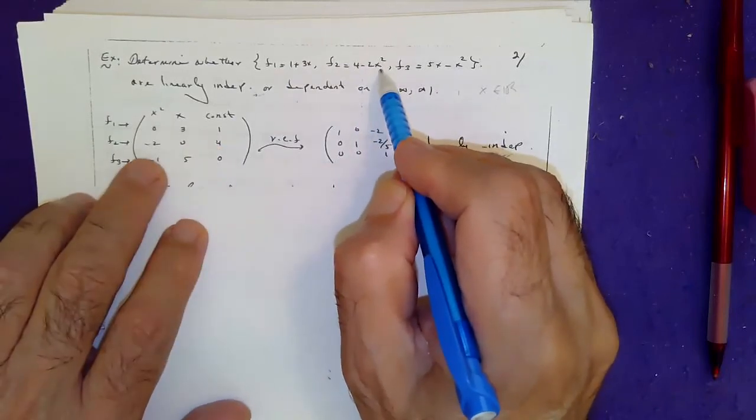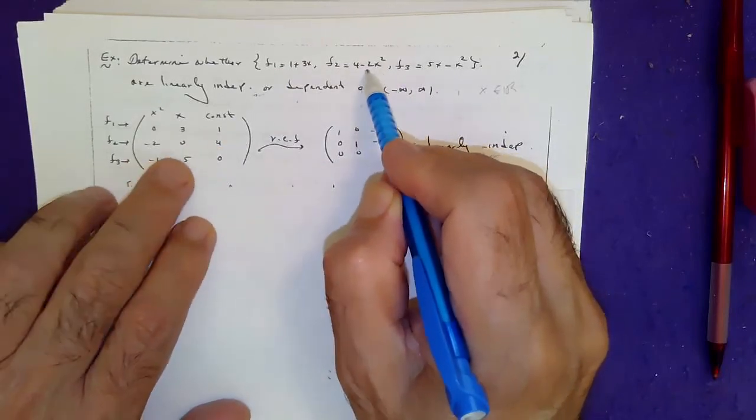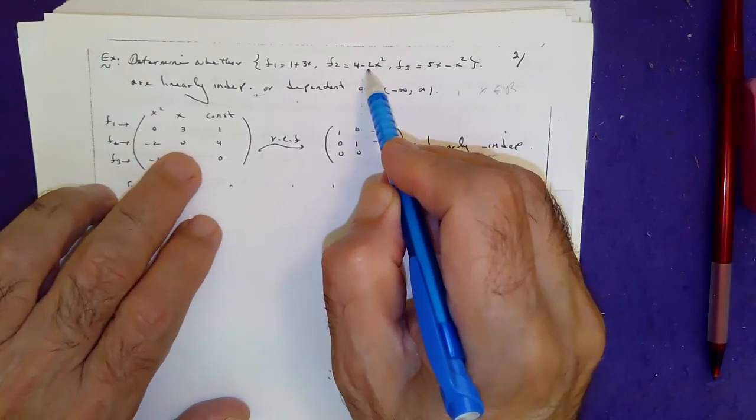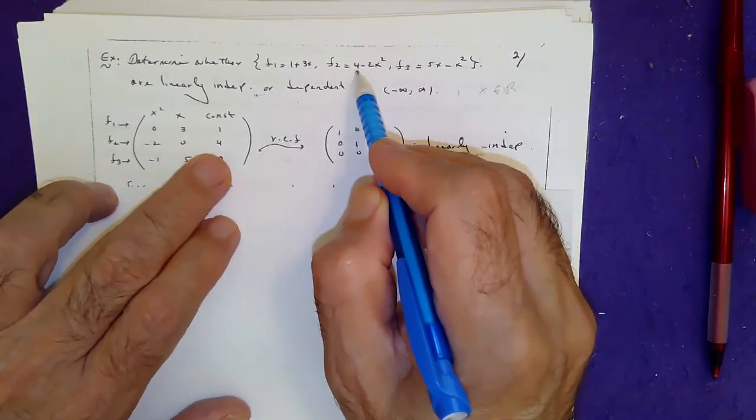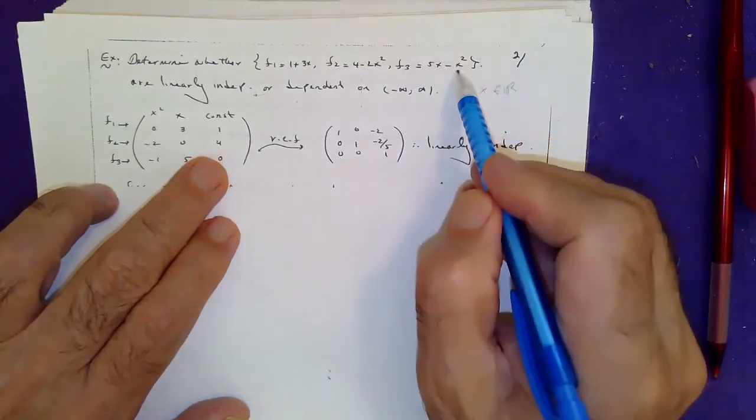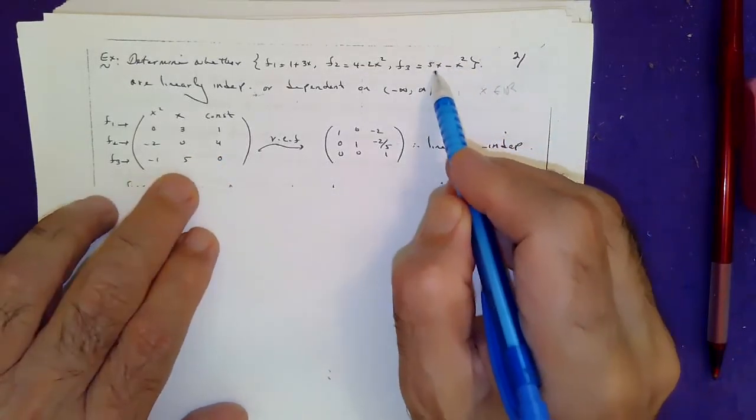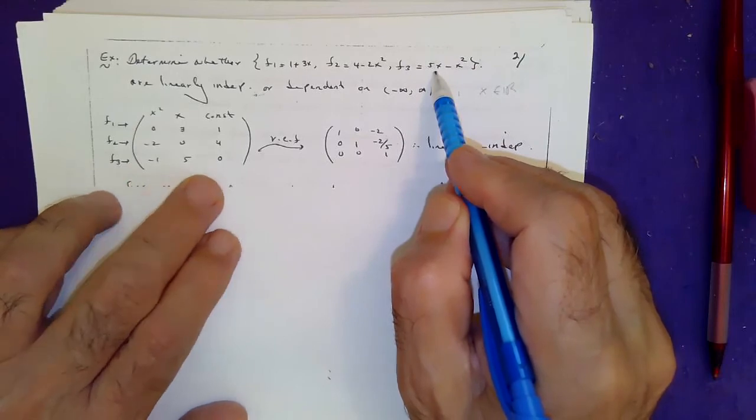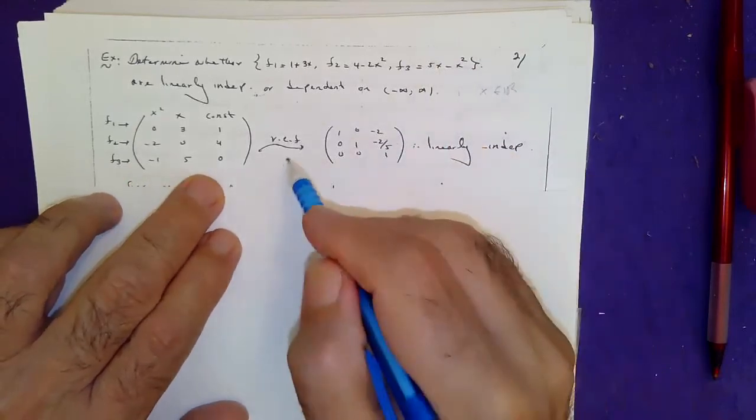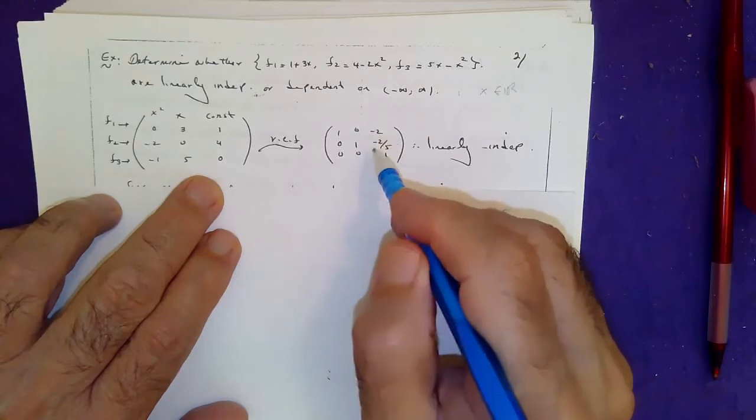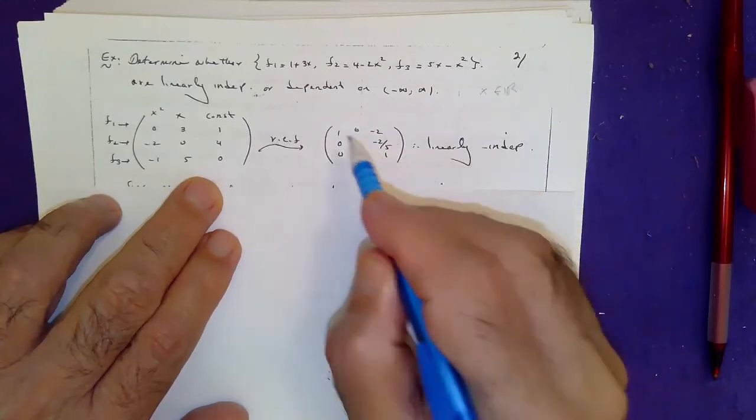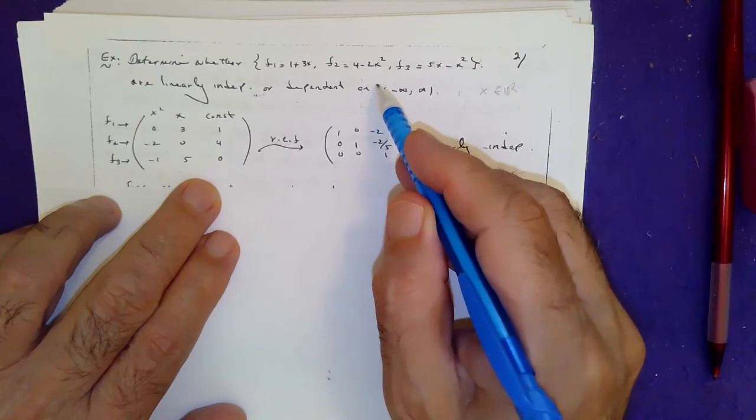For function number three, the coefficient of x squared is negative one. Coefficient of x is five, but there is no constant. Put this in row echelon form and by inspection, tell if these functions are linearly dependent or independent.